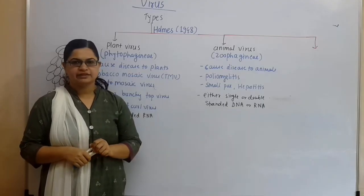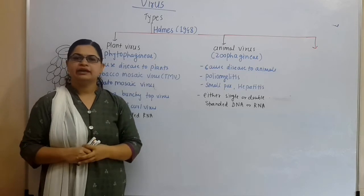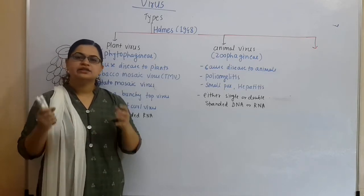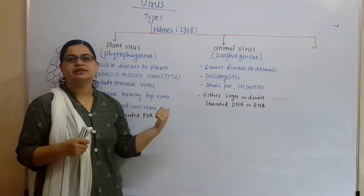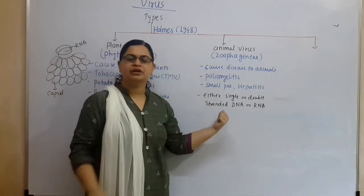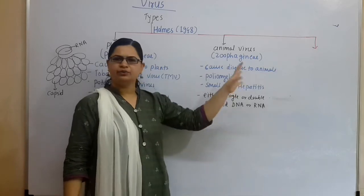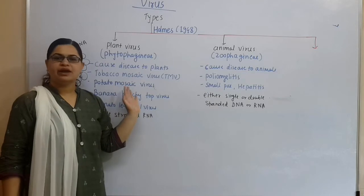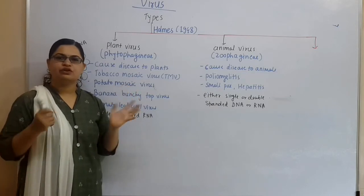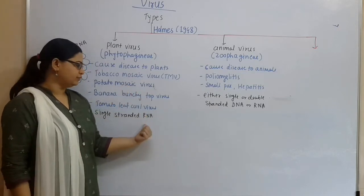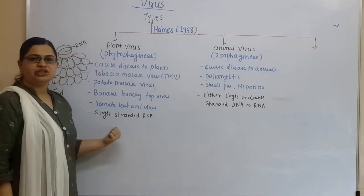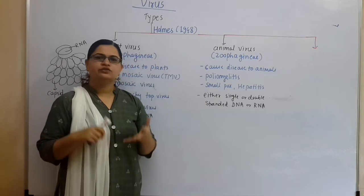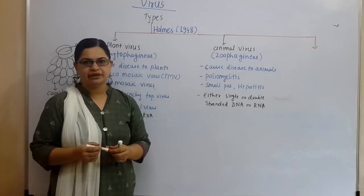Now we will discuss the types of viruses. Holmes in 1948 divided viruses into three types: viruses that cause harm to plants are called plant viruses, viruses that cause harm to animals are called animal viruses, and a third type we will discuss shortly. Let us first quickly discuss the genetic material of viruses — it has a nucleoprotein.